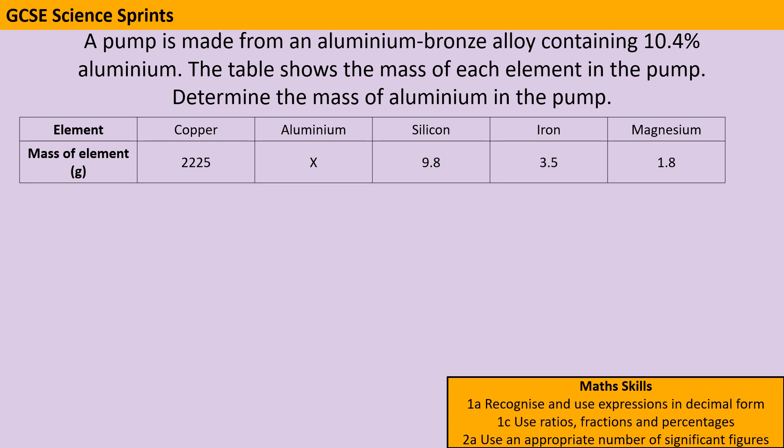So we're trying to work out what the mass of aluminium in this alloy is, and we've got the masses of the other four components, and we know that overall it's 10.4% aluminium. Our first step is to add together the masses of the four components that we do know, and then we need to know what overall percentage that is.